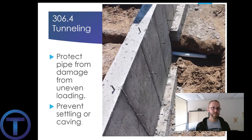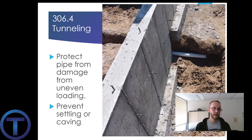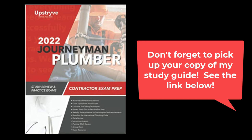306.4 talks about tunneling. The pipe has to be protected from damage from uneven loading. So if it's coming through under a foundation, we want to make sure it's very well supported and prevented from settling or caving. That does it for this presentation. We have covered International Plumbing Code Chapter 3 from Section 301 to 306. Join me next time and we will finish the chapter from 307 to the end.